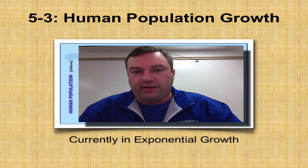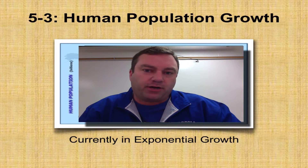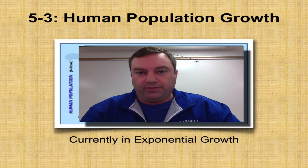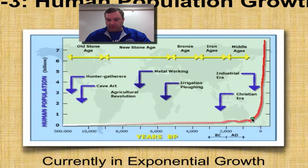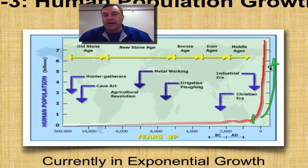Welcome to our fifth and final episode from Chapter 5. In this episode we're going to talk about human population growth. As I mentioned in a previous screencast, humans have been in exponential growth since the dawn of the industrial era. Right around the beginning of the industrial revolution, human population growth just skyrocketed. We're in exponential growth.